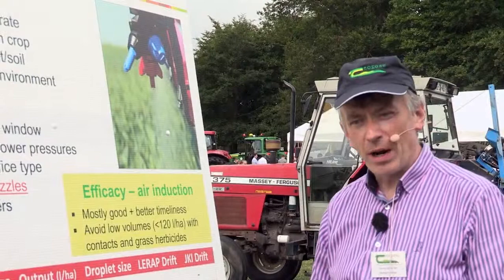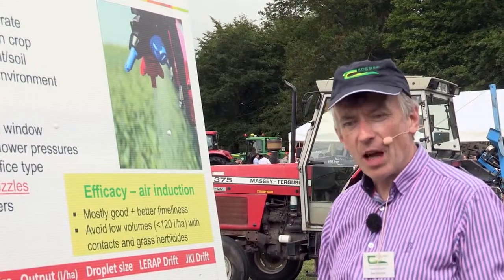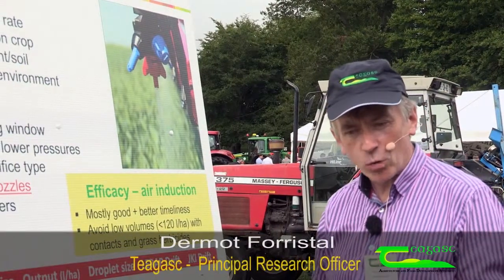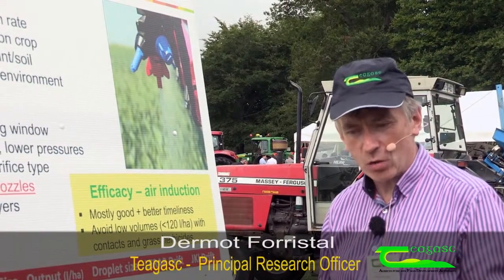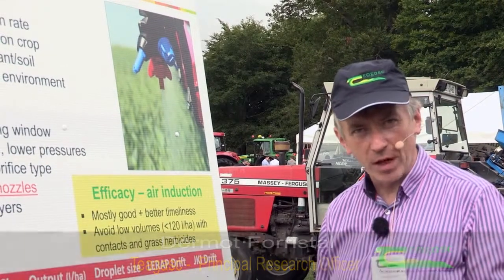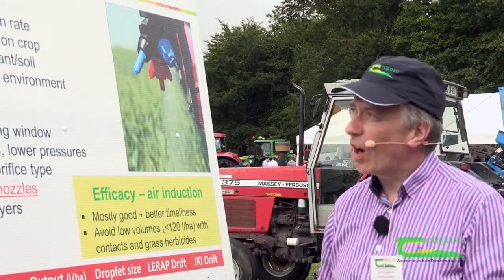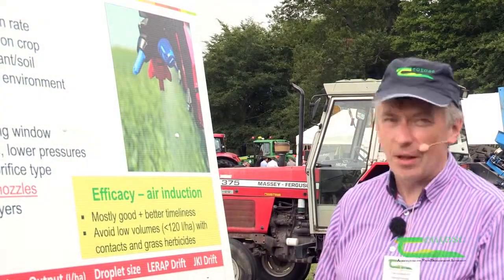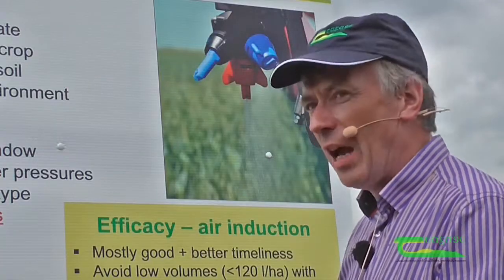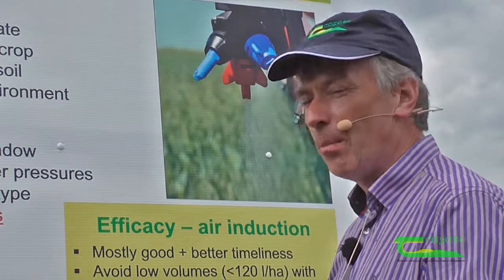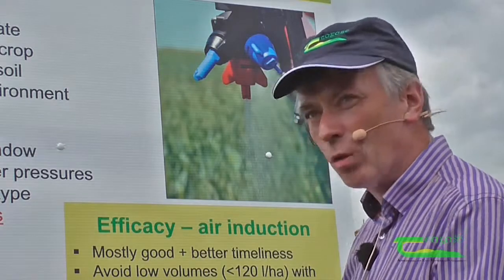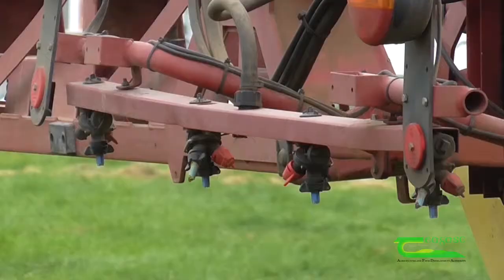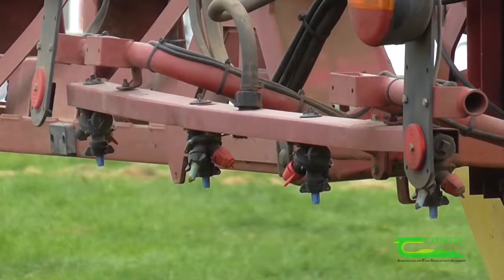Nozzles are probably the most important part of the sprayer. It's the nozzle which really determines whether we get the right rate or application rate of the product we're trying to apply onto the crop. It also determines how evenly we get it onto the crop and how evenly it's deposited within the crop down on the actual foliage itself. So nozzles are hugely important.